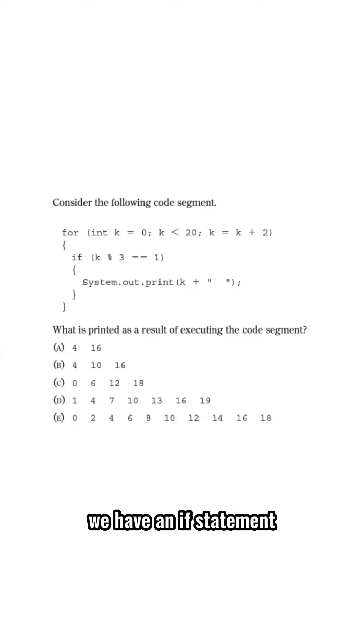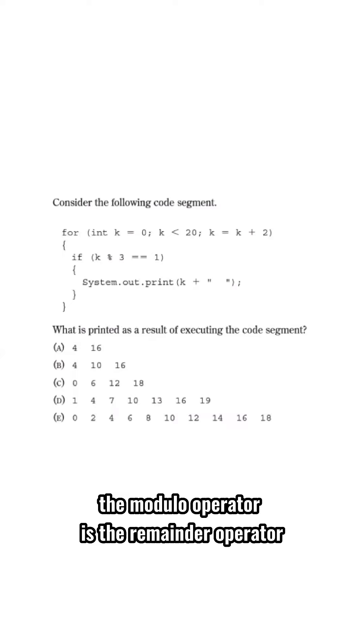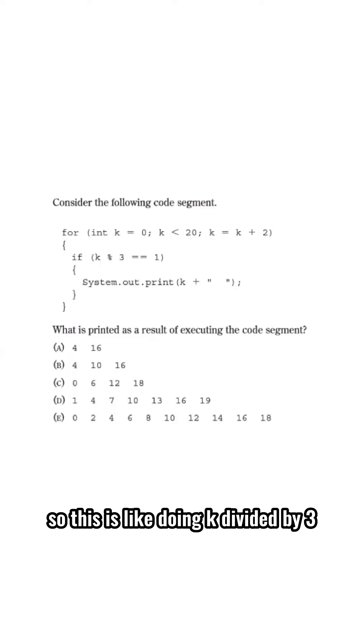Inside the loop, we have an if statement. If k modulo 3 is equal to 1, then print k followed by a space. The modulo operator is the remainder operator, so this is like doing k divided by 3, grabbing the remainder, checking if that is equal to 1.